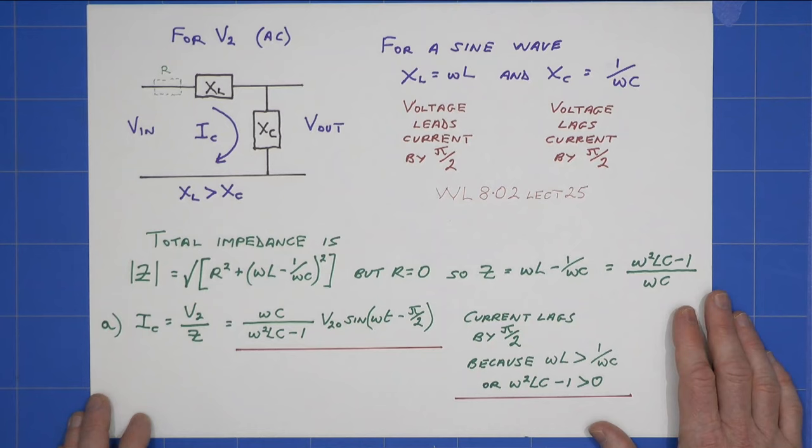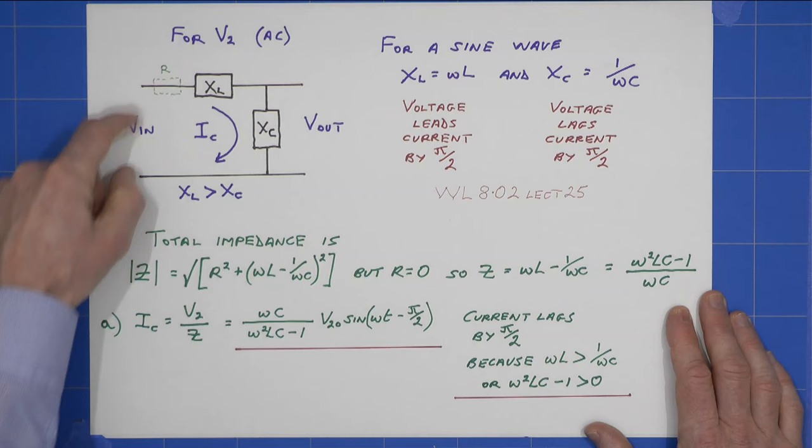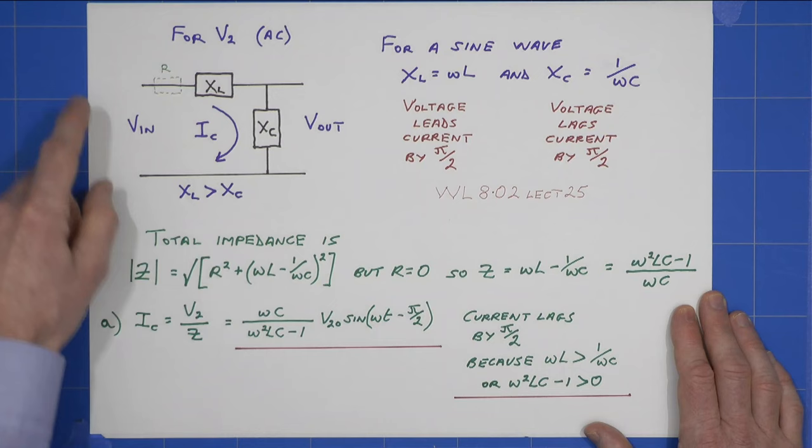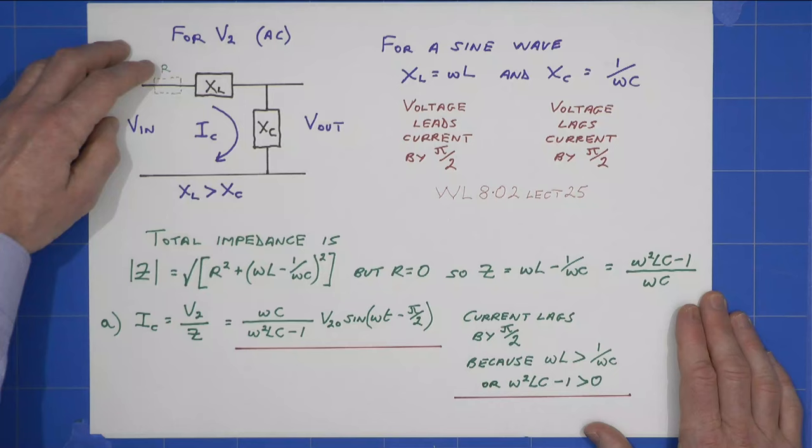So for our AC analysis, we have a circuit that looks like this. If there was some, or we're told that XL is greater than XC, reactance of the inductor greater than that of the capacitor. If we had some resistance in this circuit, you would see from his lecture 25 of 8.02 that the impedance,